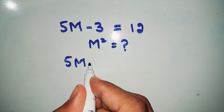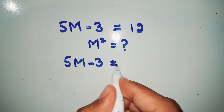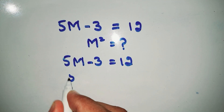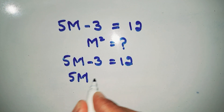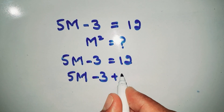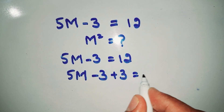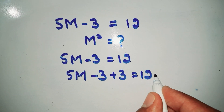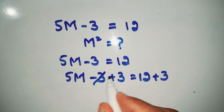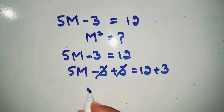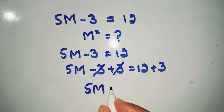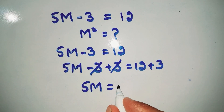Now we write 5m minus 3 plus 3 is equal to 12 plus 3. So now minus 3 and plus 3 cancel out. We write 5m is equal to 12 plus 3, which is equal to 15.